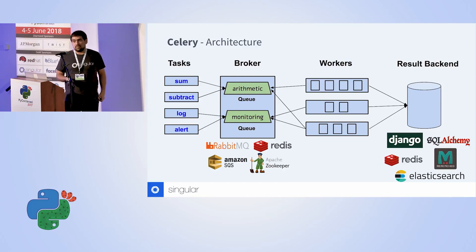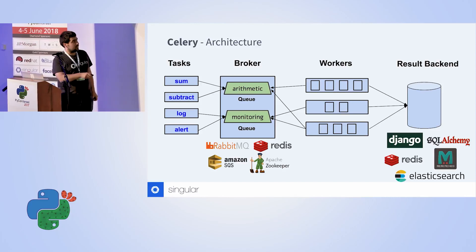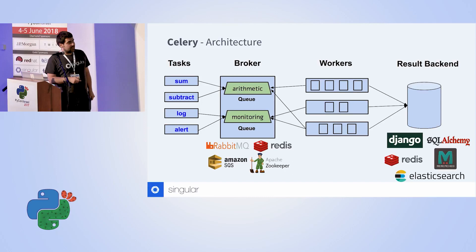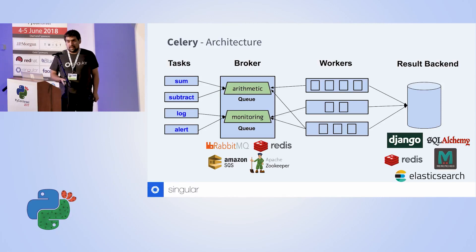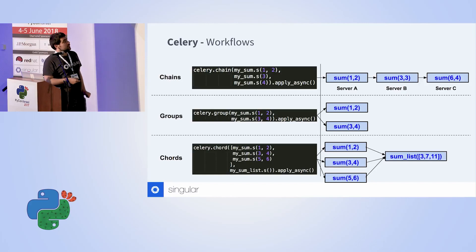One of the main reasons we liked Celery at Singular is that you can customize the technology used both in the broker and the backend. Specifically we used Redis for the broker because we really love Redis and use it in many systems at Singular. The result backend can basically be any type of database that Django or SQLAlchemy support, and also Redis, Memcached, Elasticsearch, or many other systems — it's really easy to extend with open source implementations.